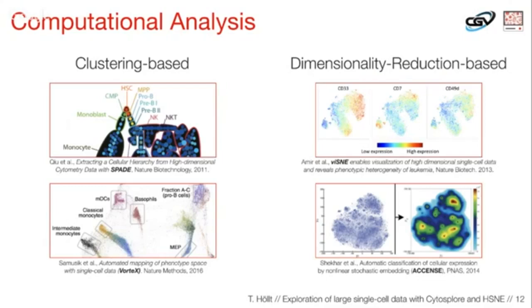It's not surprising that there has been quite a bit of work in computational analysis in the last couple of years. These approaches separate into two main groups: clustering-based approaches, which find groups of similar cells and visualize those groups as nodes in a graph; and dimensionality reduction-based approaches, where you retain access to single cells — every point in the plot is a single cell — but reduce the dimensionality. Taking these 40 markers, we try to represent them in just two dimensions that we can plot on a regular scatter plot.